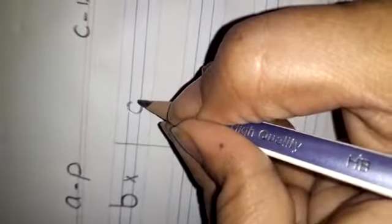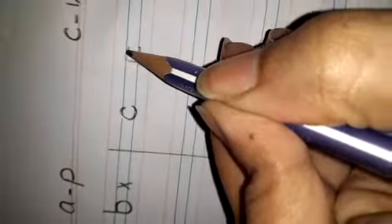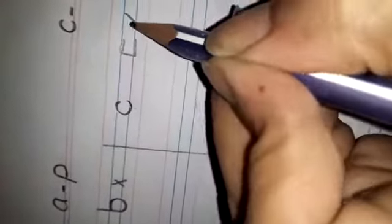Next is K. Curvy curve. K. Curvy curve. Don't make corner like this. You have to make it round like this. It will be wrong.